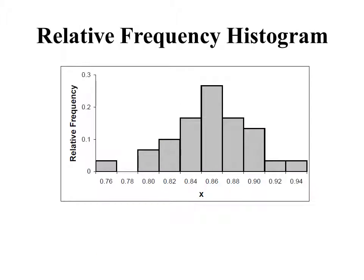Next we draw a relative frequency histogram — a picture of the relative frequency distribution, very similar to the histograms from Chapter 2. The vertical axis is labeled relative frequency; the horizontal axis shows values of x. For each bin we draw a vertical bar with height equal to the relative frequency, with the bar centered at the midpoint of the subinterval. The first bar is at midpoint 0.76. Remember that relative frequencies are approximations of probabilities, so where bars are tall, x has a higher probability of taking on values in that interval.